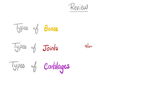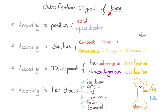Let's review types of bones, types of cartilages, and types of joints. First, types of bones — there are many types depending on how you classify them. Based on position: axial or appendicular (axial is your vertebral column; appendicular is your radius and ulna). According to structure: compact bone and cancellous bone. According to development: intramembranous and intracartilaginous. According to shape: long bones, short bones, flat bones, irregular bones, pneumatic bones, and sesamoid bones — all discussed in previous videos.